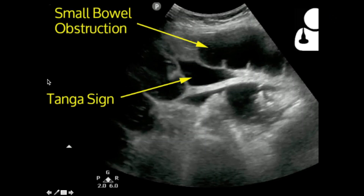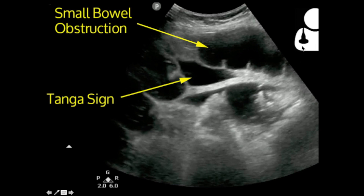On this last still, we can see our fifth and final sign that we look for in a small bowel obstruction, called the tanga sign. Here we have some small bowel — we can actually see some keyboarding again — and then here we have some free fluid. The tanga sign is two loops of bowel with free fluid between them. This is due to increased intraluminal pressure, which pushes against the walls, increases permeability, and allows some fluid to leak out. Credit for this slide goes to Ben Smith, since he took this image.